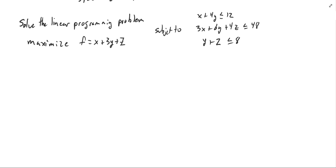I want to solve the linear programming problem. Maximize f(x) equal to x plus 3y plus z, subject to x plus 4y less than or equal to 12, 3x plus 6y plus 4z less than or equal to 48, y plus z less than or equal to 8. And our standard constraints: x, y, and z all greater than or equal to 0.